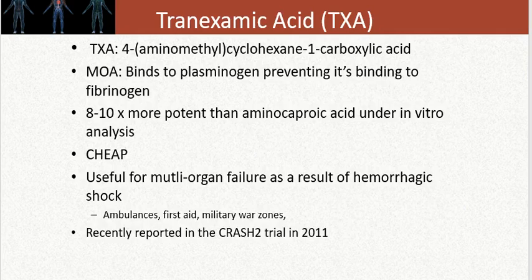The other drug in this category is tranexamic acid, or TXA. Mechanistically very similar, it binds to plasminogen preventing its binding to fibrinogen, and it is eight to ten times more potent than aminocaproic acid in vitro. This drug is relatively cheap and is used for multi-organ failure resulting from hemorrhagic shock. It's commonly used in ambulances, first aid, and military war zones, and was reported in the CRASH-2 trial in 2011 to be a clinically very useful drug in disasters or terrorist events.